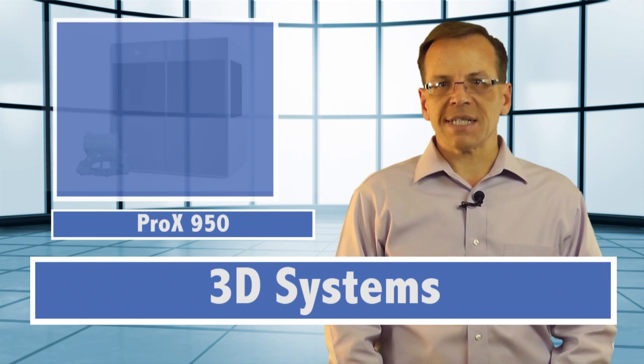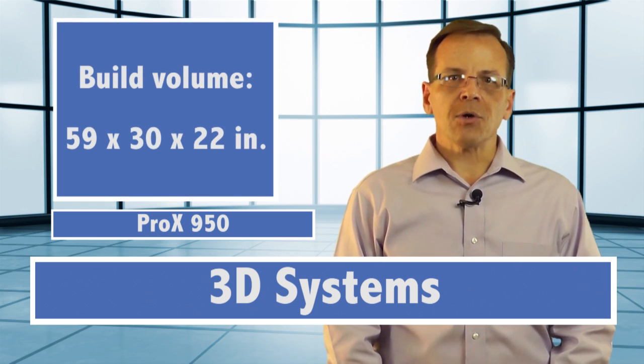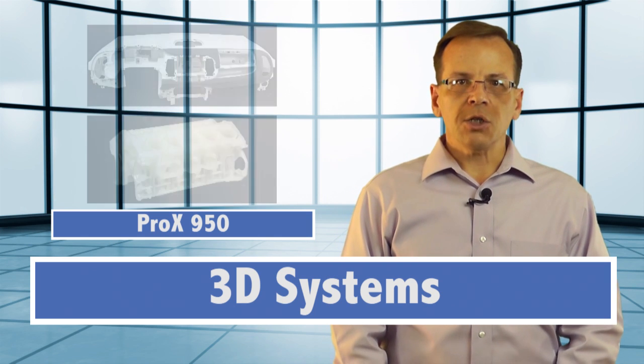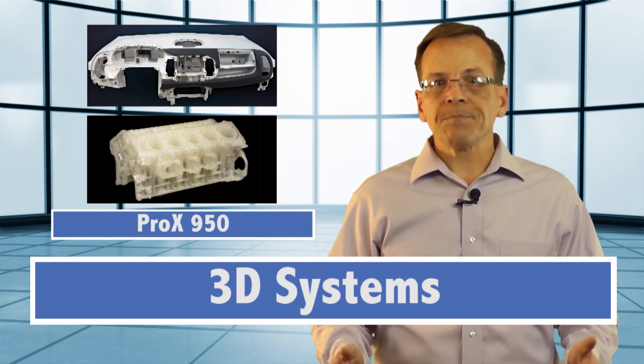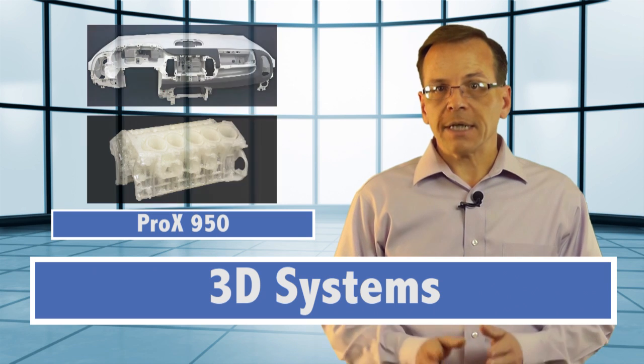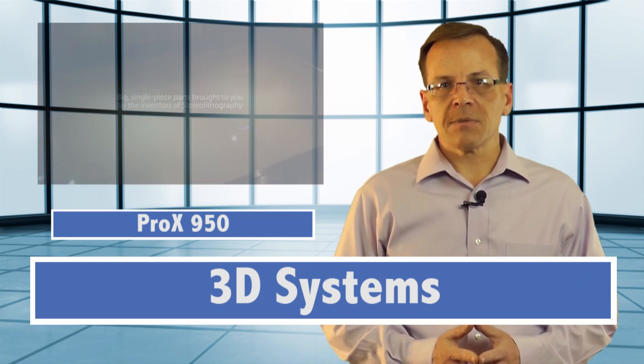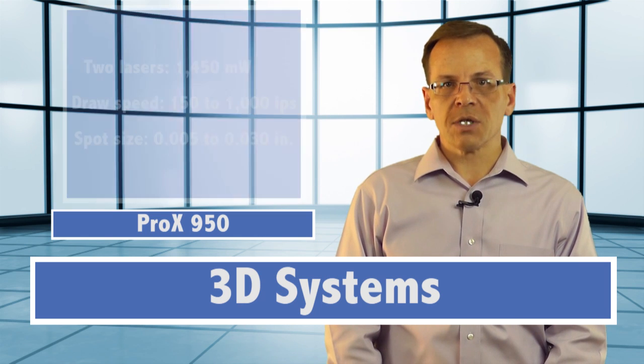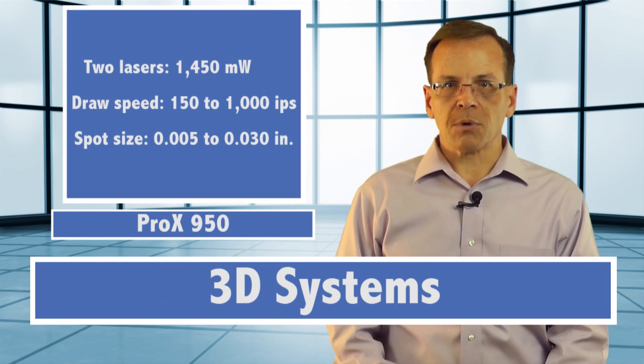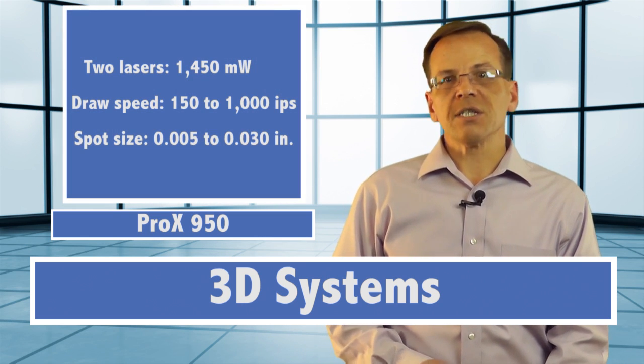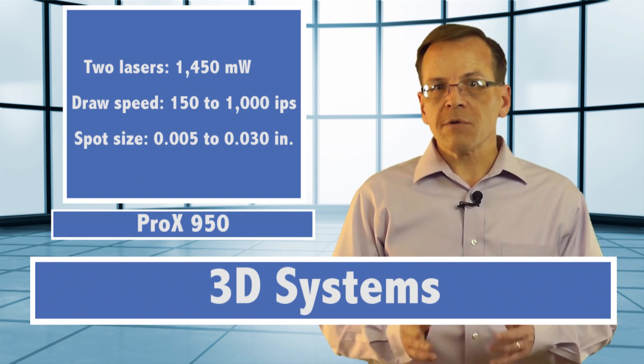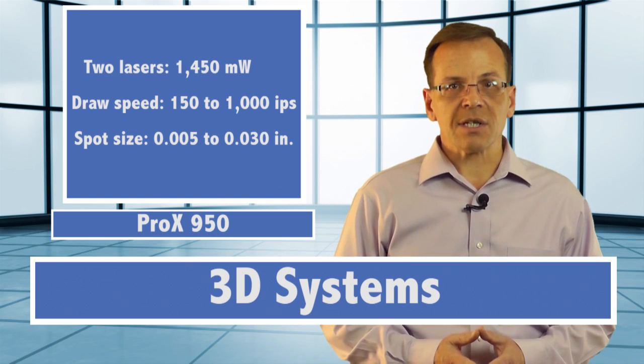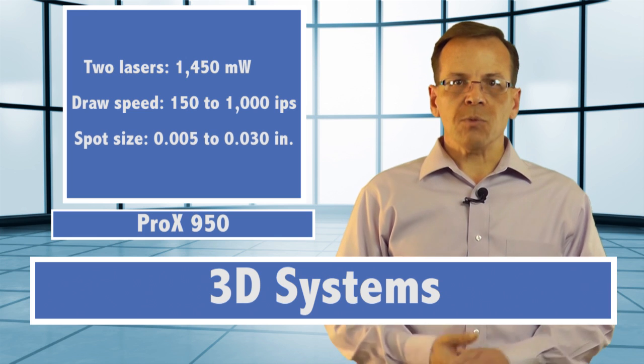The ProX 950 has a large 59 x 30 x 22 inch build envelope that you can use to make one large part or dozens of small parts. To keep the throughput high, 3D Systems has outfitted this 3D printer with dual 1450 milliwatt lasers that draw out up to 1000 inches per second with a 0.00030 inch spot size. It also focuses the beam down to finer detail for smoother surfaces.